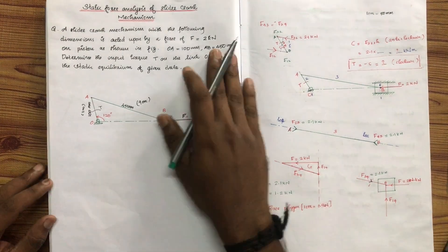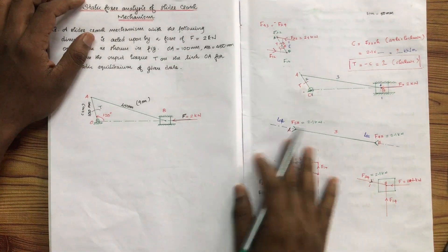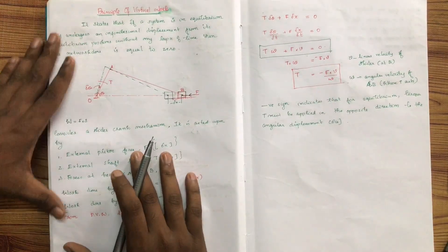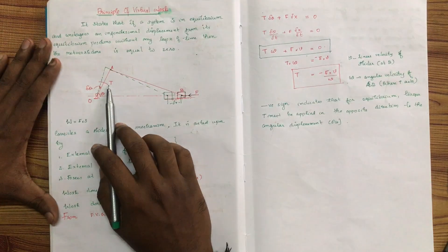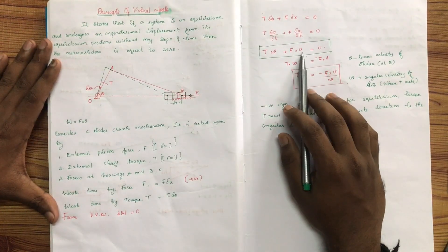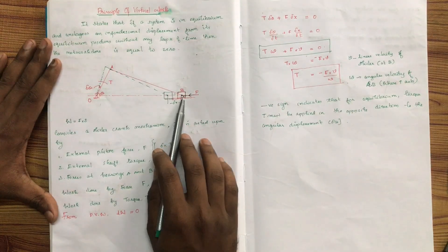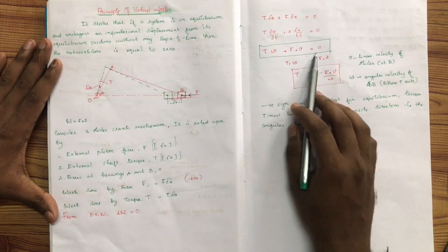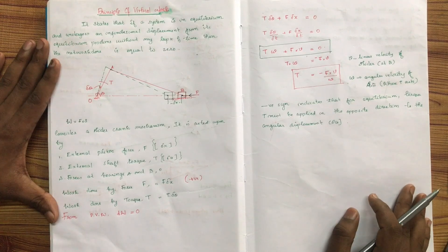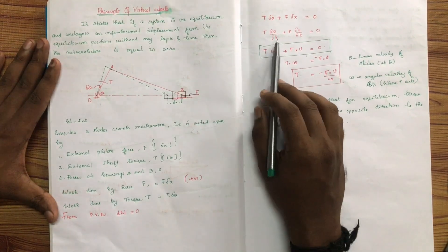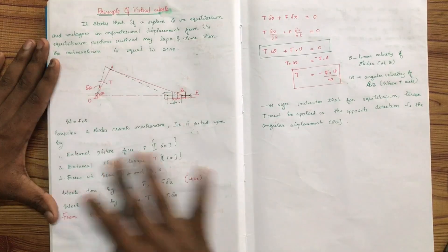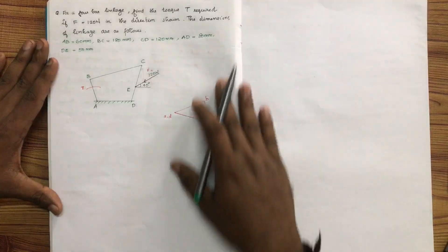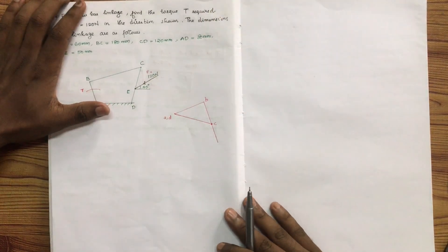Now we are going to talk about the principle of virtual work. The equation is torque multiplied by angular velocity, plus force multiplied by velocity in the direction of the force. We are going to explain the principle of virtual work and apply it to four-bar mechanics.